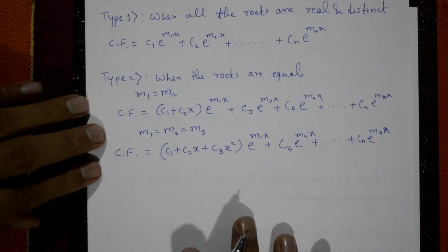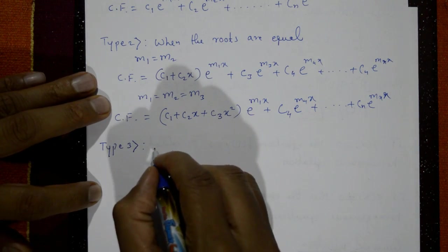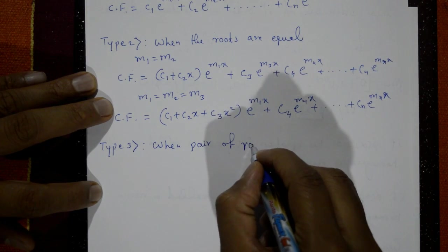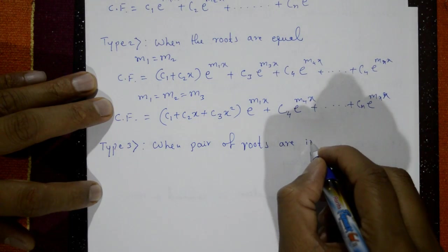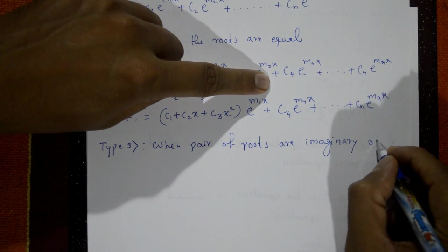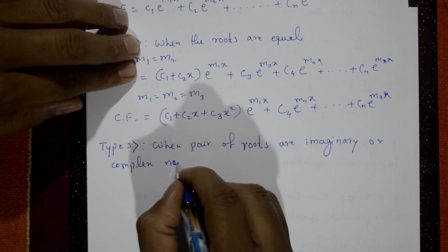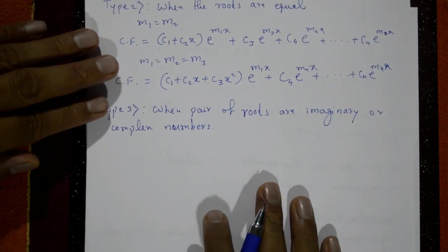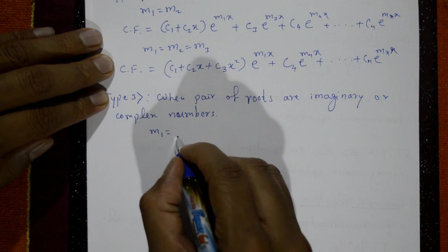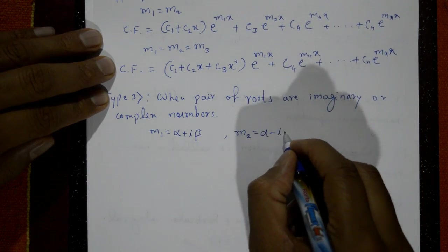Type 3: when a pair of roots are imaginary or complex numbers. That means the first root m1 = α + iβ and the second root m2 = α − iβ. These are complex roots.